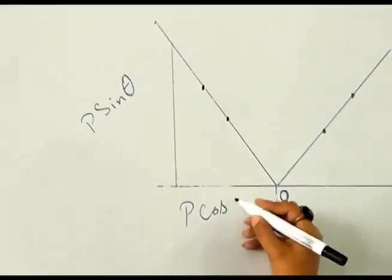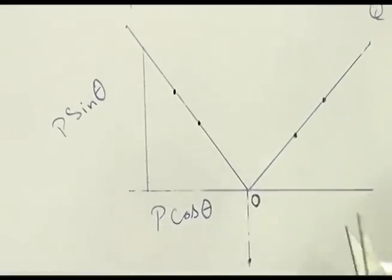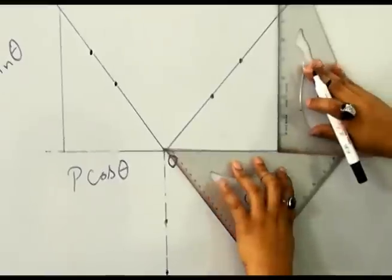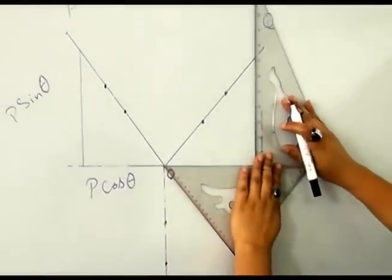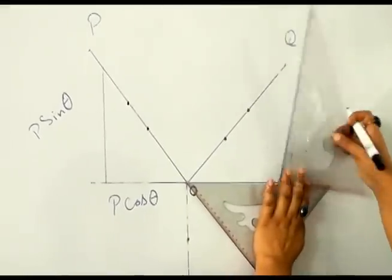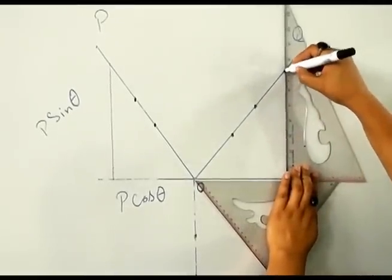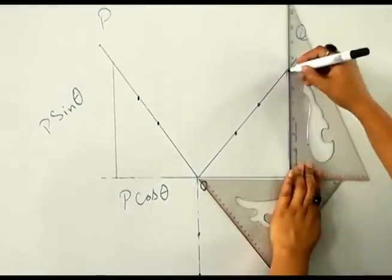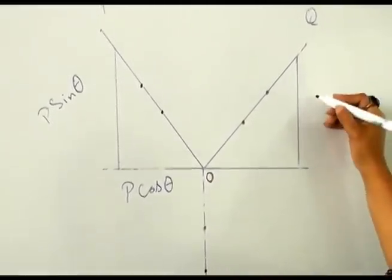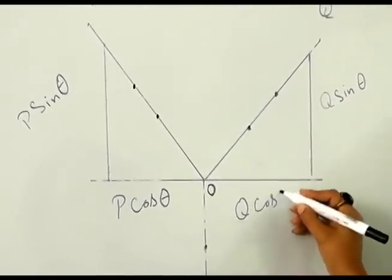Now for force Q we will perform the same procedure. This is the horizontal component and this is the vertical component at angle of 90 degree. These are the two components of force Q. Vertical component is Q sin theta and horizontal component is Q cos theta.